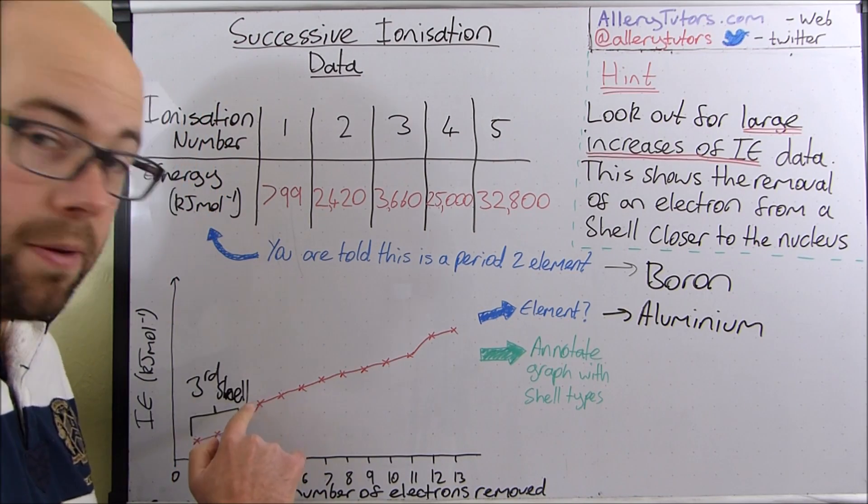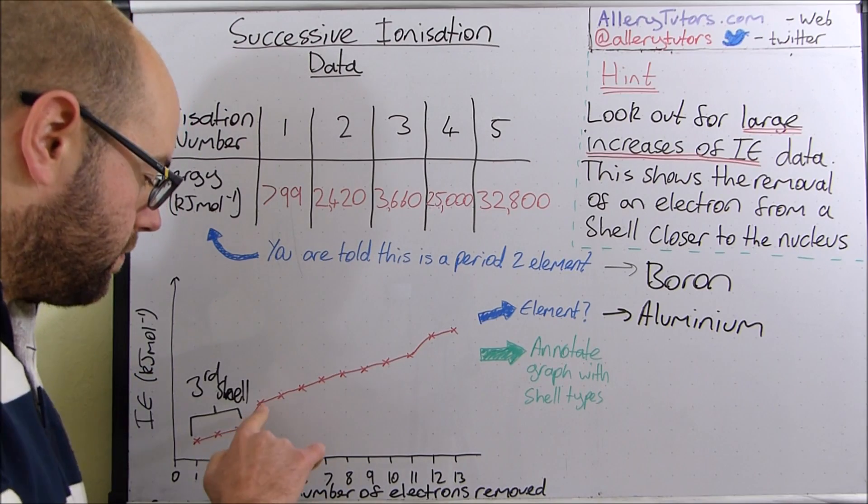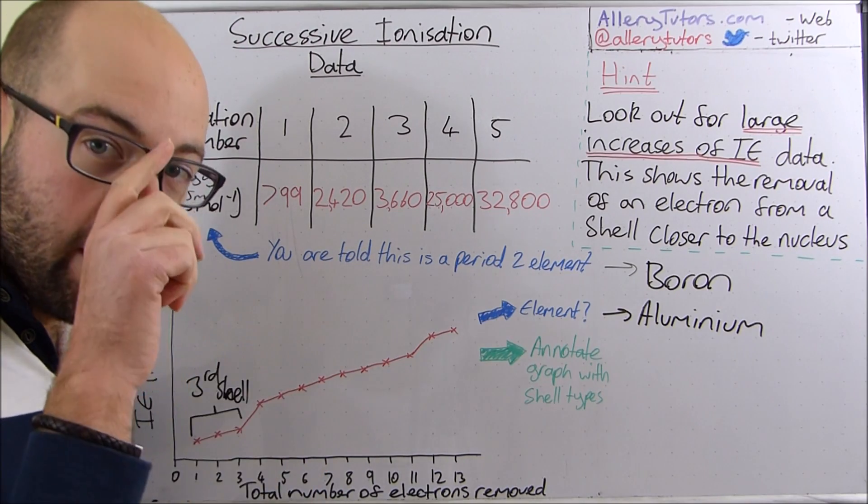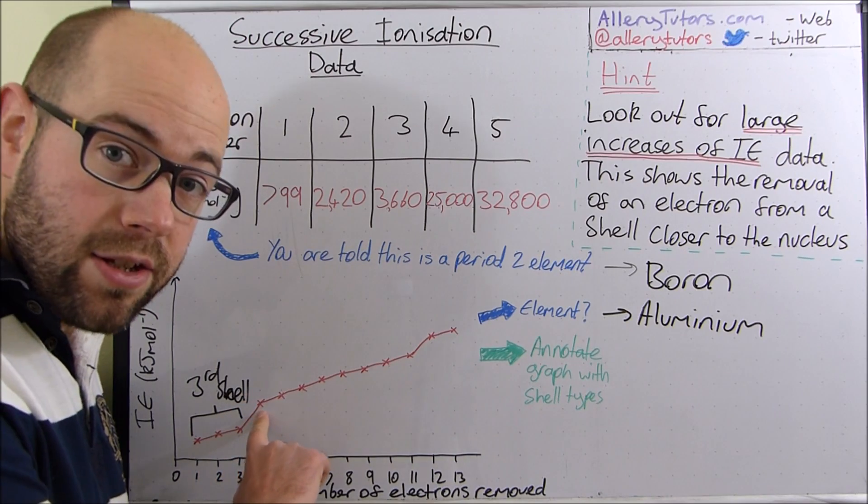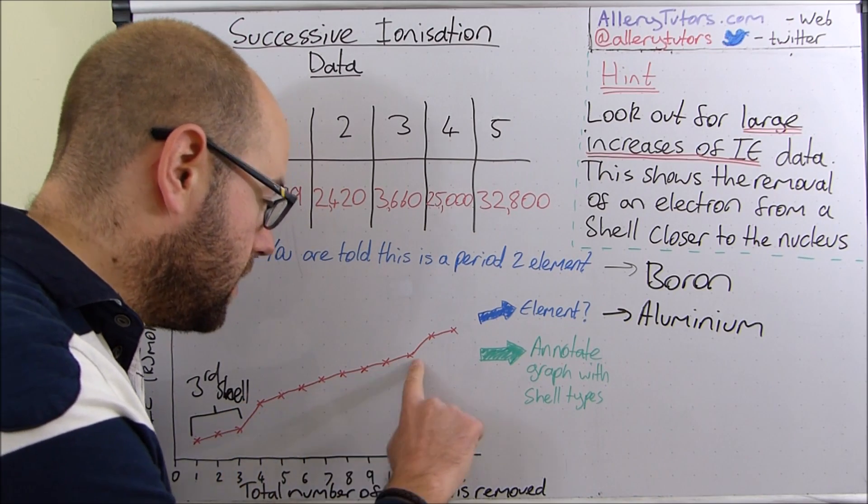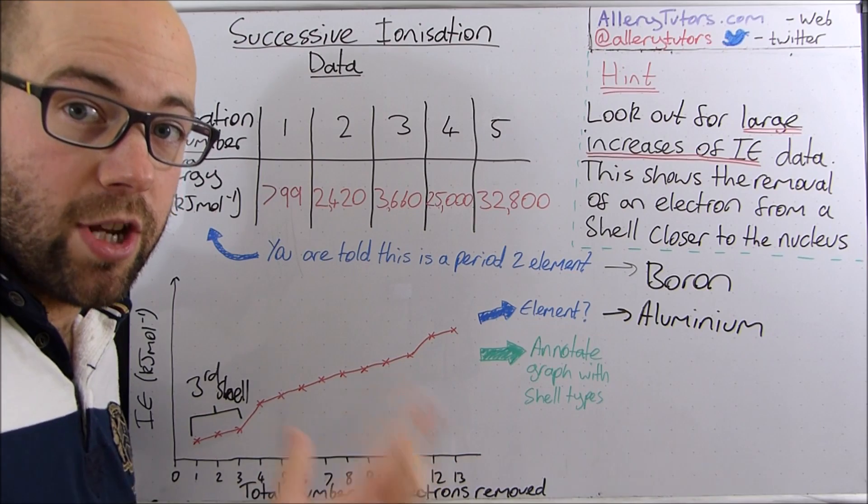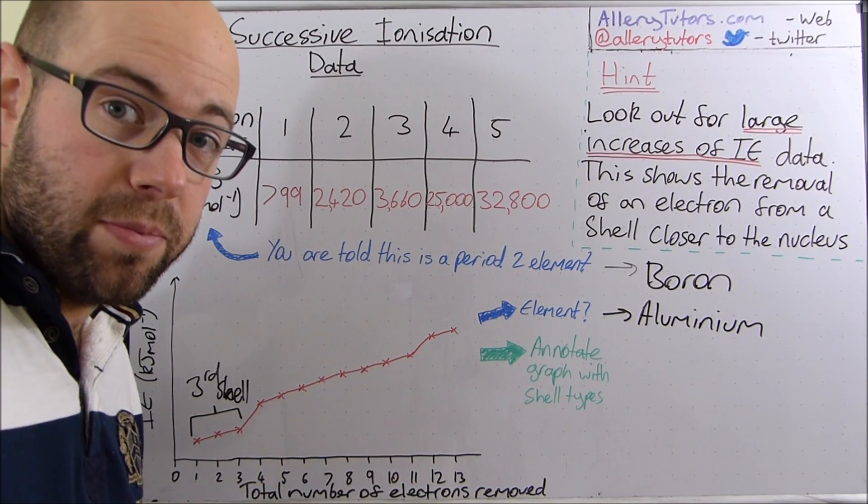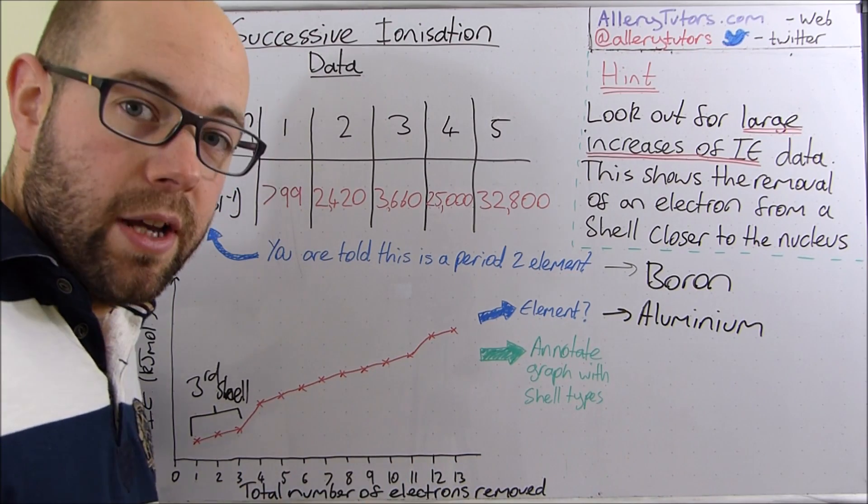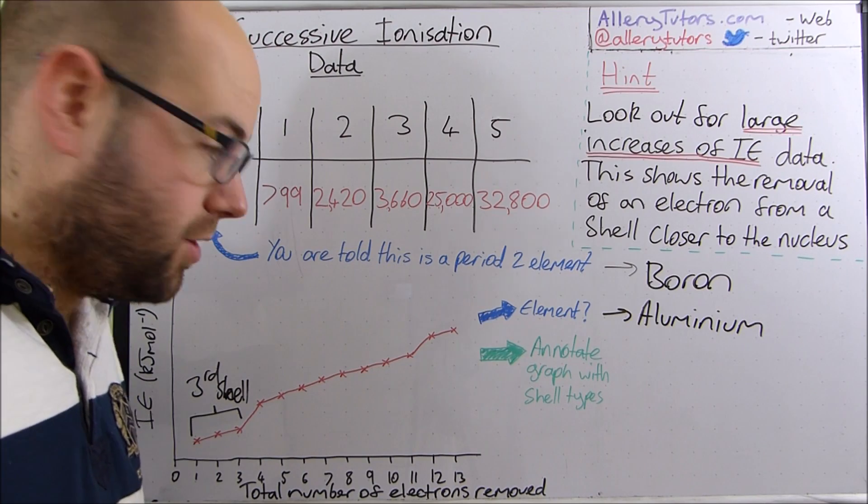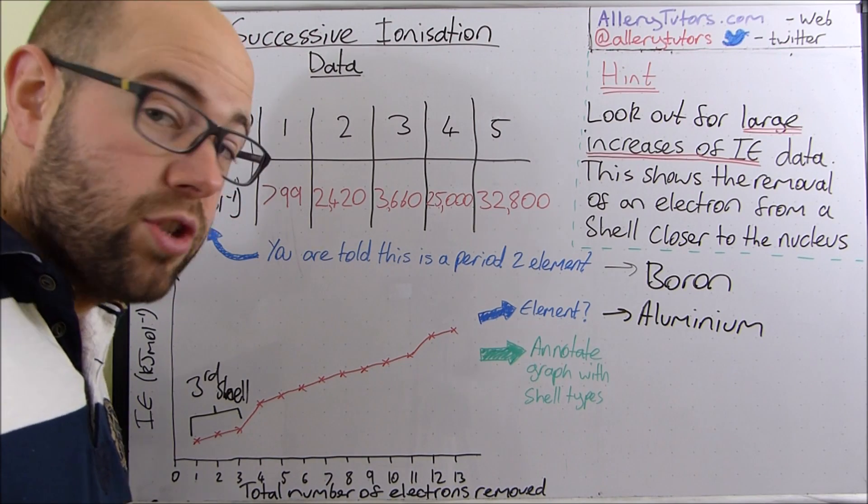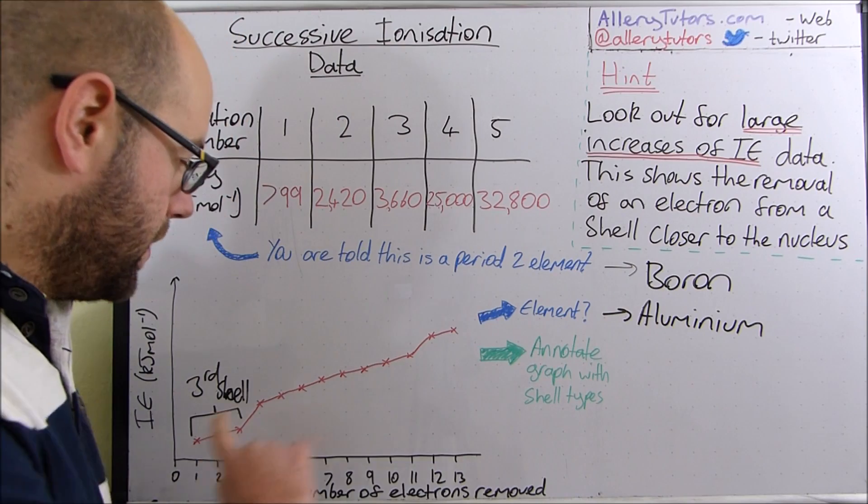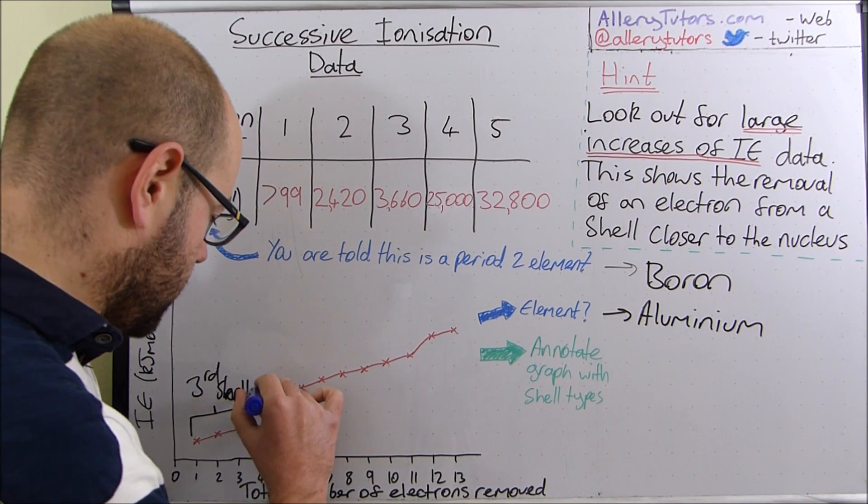Then there's a big jump. This big jump is because now we're removing an electron from a shell that is much closer to the nucleus. And in this shell, we have eight electrons. Now remember, this shell will be split into sub-shells. So here you would have your S and P shells as well. So this would be your 2S and 2P shell that would make up this. But this is effectively the second shell.